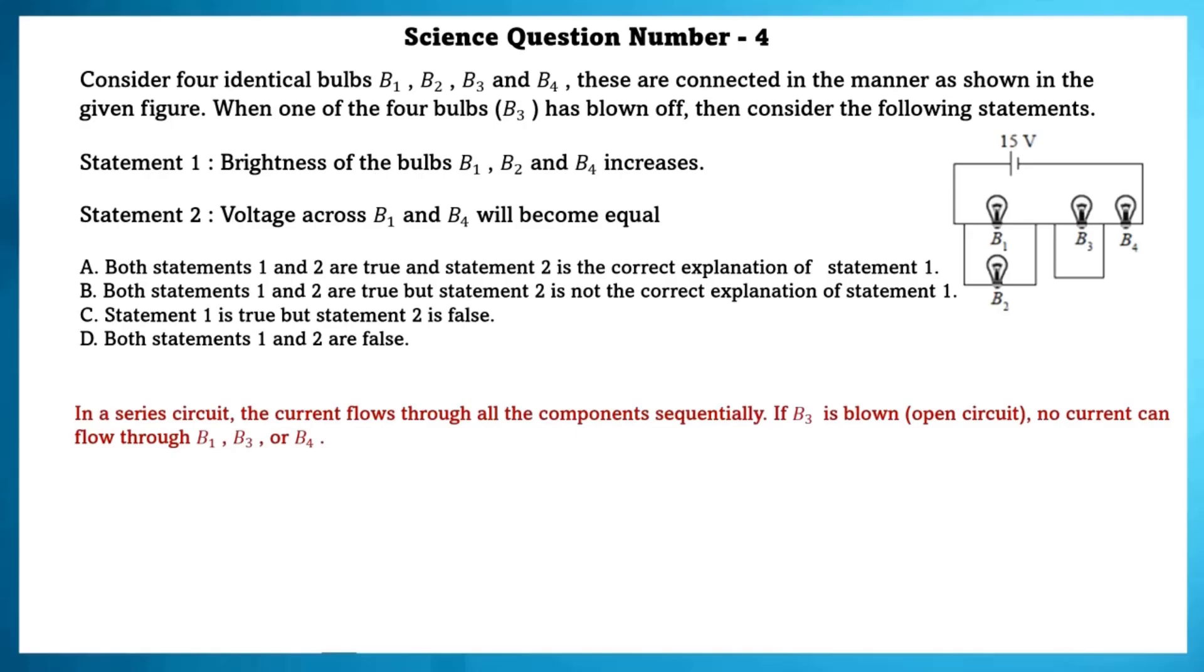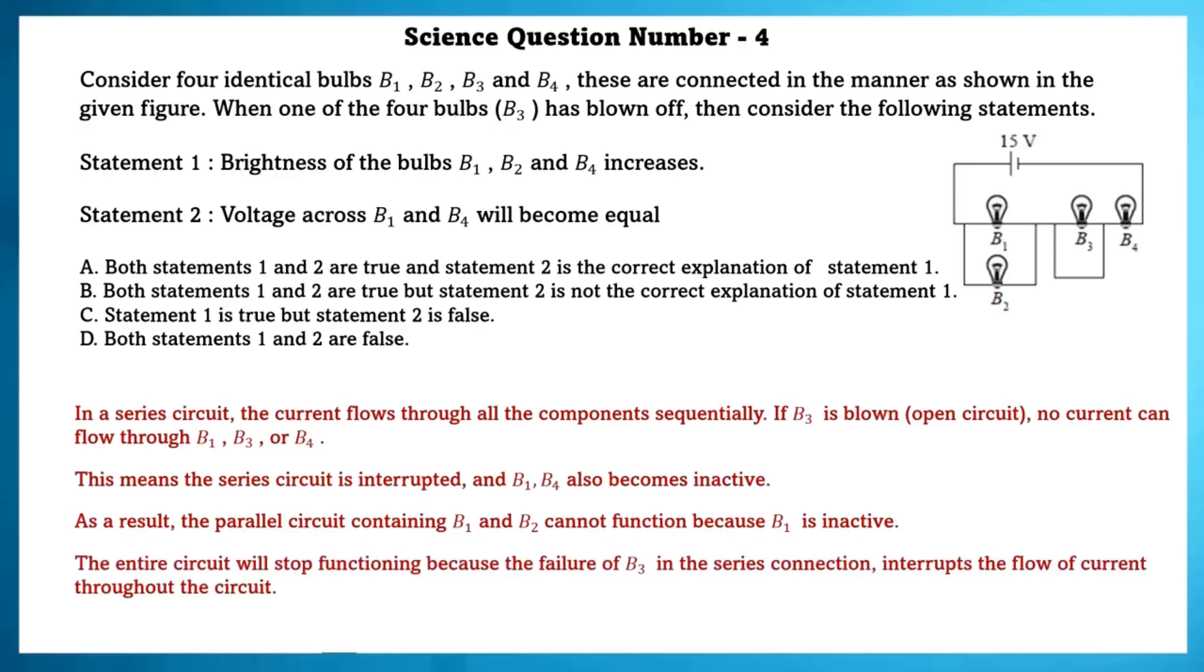In series circuit, the current flows through all the components sequentially. If B3 is blown out, open circuit, no current can flow through B1, B3 or B4. This means the series circuit is interrupted and B1, B4 also become inactive. As a result, the parallel circuit containing B1 and B2 cannot function because B1 is inactive. The entire circuit will stop functioning because of the failure of B3 in the series connection, interrupts the flow of current throughout the circuit. So both statement 1 and statement 2 are false.